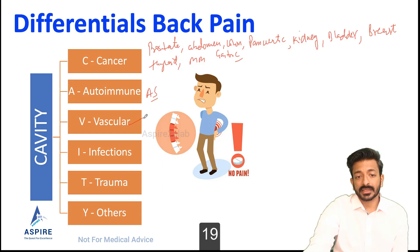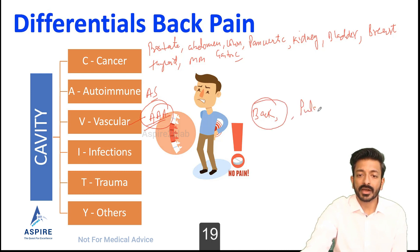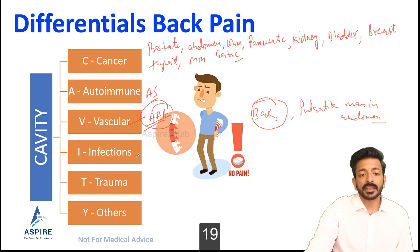For vascular causes, think about Triple A — abdominal aortic aneurysm. The patient will be having pain in the back, and you can find a pulsatile mass in the abdomen. The pain will be severe and radiating to the back.